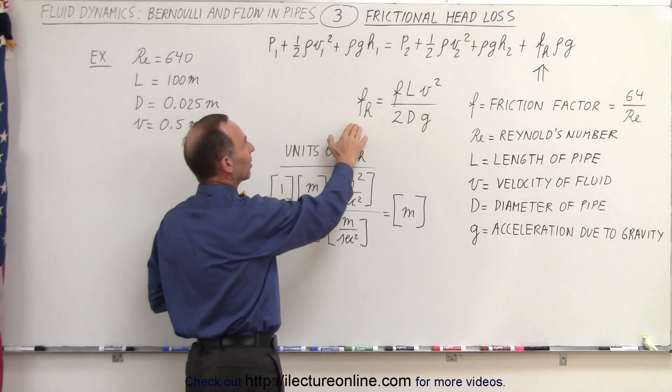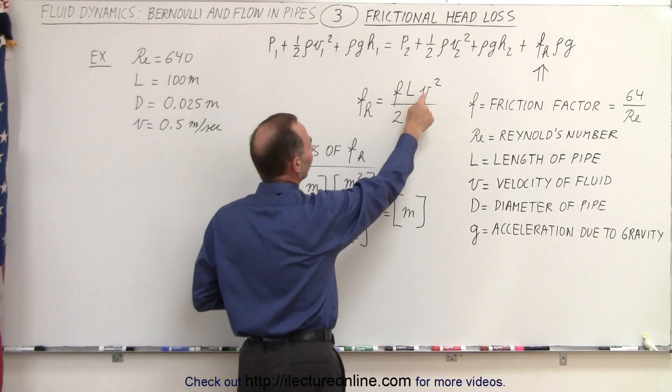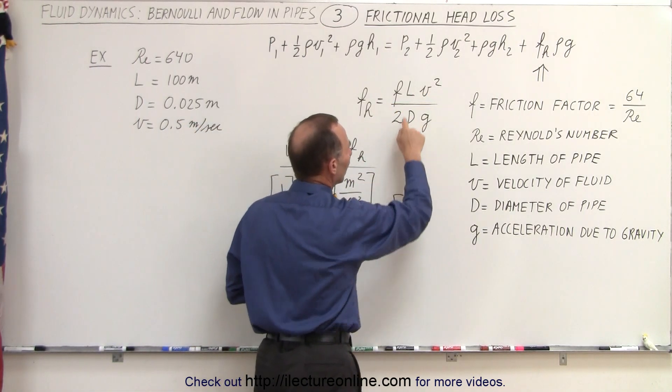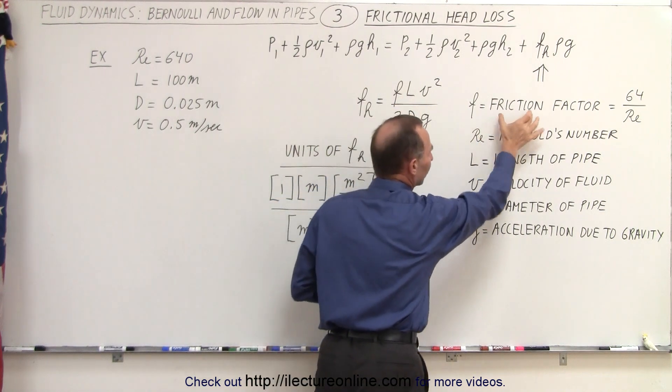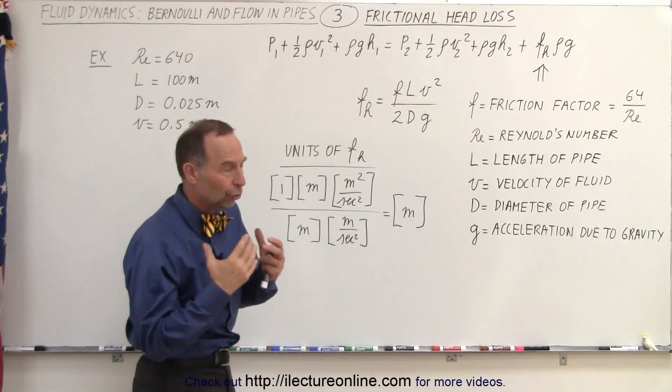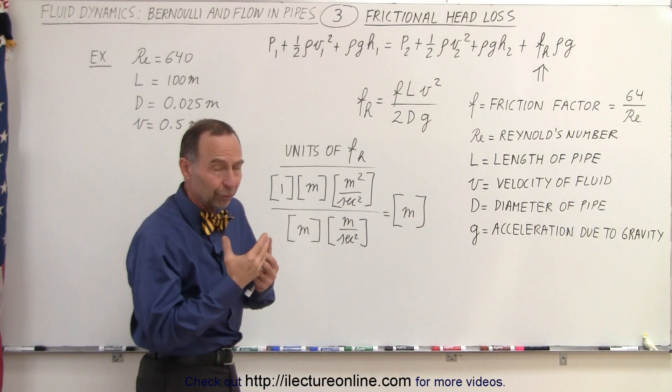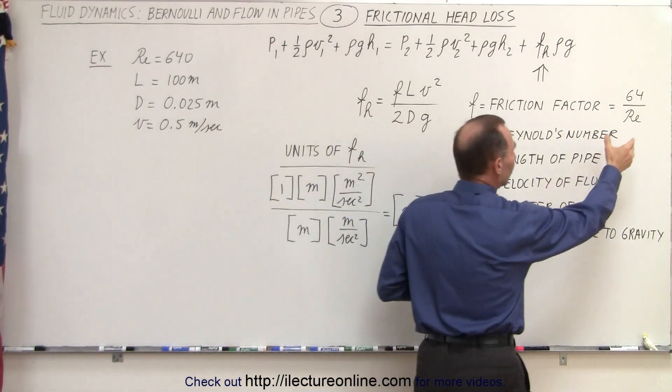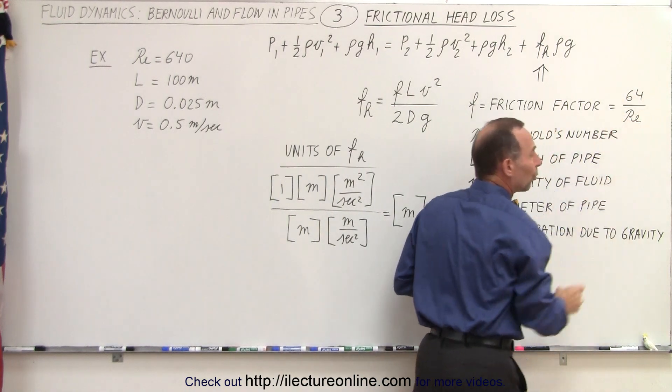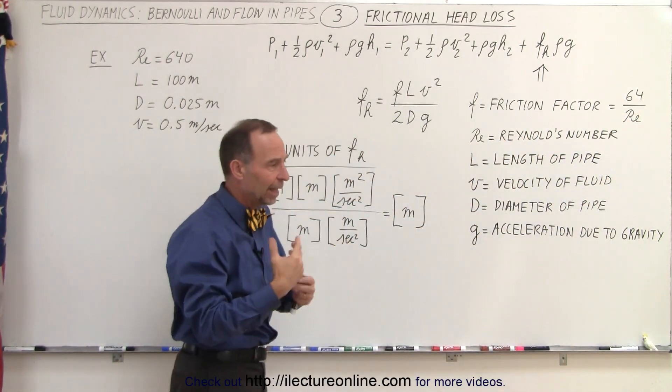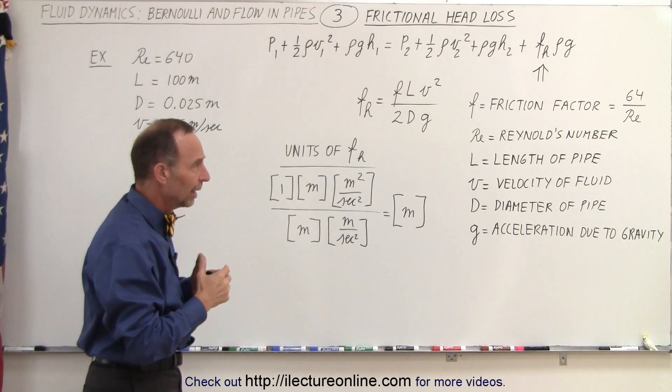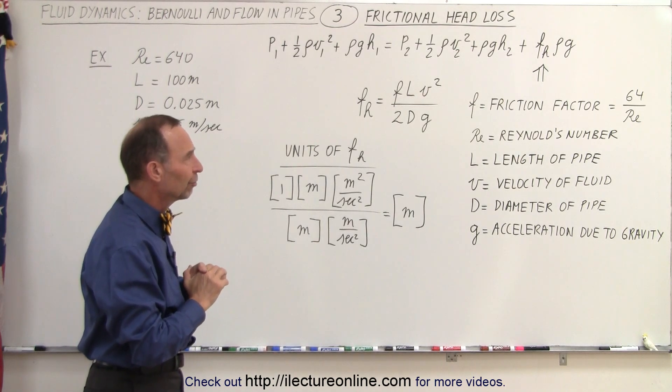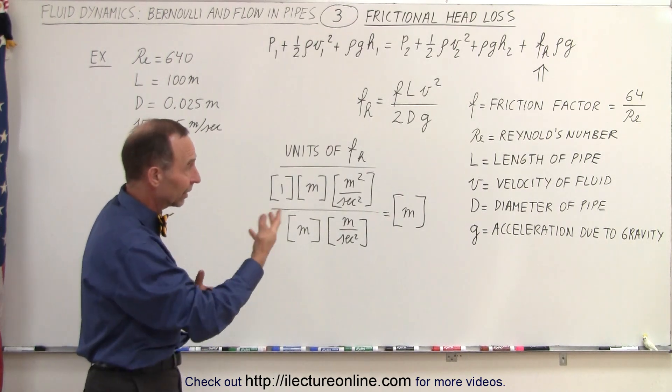How do you calculate the frictional head loss? Well, it's equal to fLv² over 2dg. Now f is what we call the friction factor, and it's determined by how fast the fluid flows—how the fluid reacts. Essentially, it's calculated to be 64 divided by the Reynolds number. And of course, the Reynolds number has to do with the internal action and forces inside the fluid, and we'll get into that in more detail in the next video.